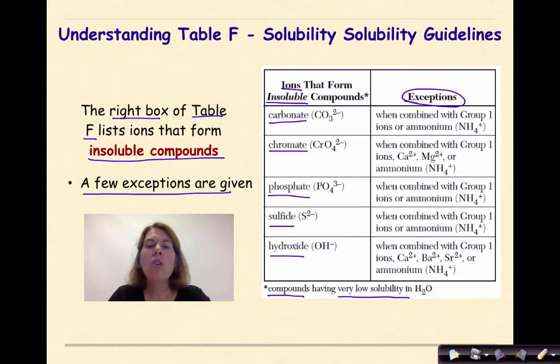So carbonate, typically insoluble unless it's combined with our group 1 ions, which makes sense because we know that all group 1 ions are soluble, or if that is with ammonium, NH4+, which again, we know that any compound that has ammonium in it will be soluble if you go back and look at the left-hand side. Chromate, CrO4-2, again, these will be soluble when we combine them with the group 1 ions, calcium, magnesium ions, or ammonium.